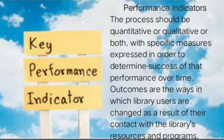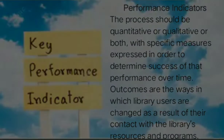Performance Indicators: the process should be quantitative or qualitative or both, with specific measures expressed in order to determine success of that performance over time. Outcomes are the ways in which library users are changed as a result of their contact with libraries, resources, and programs.